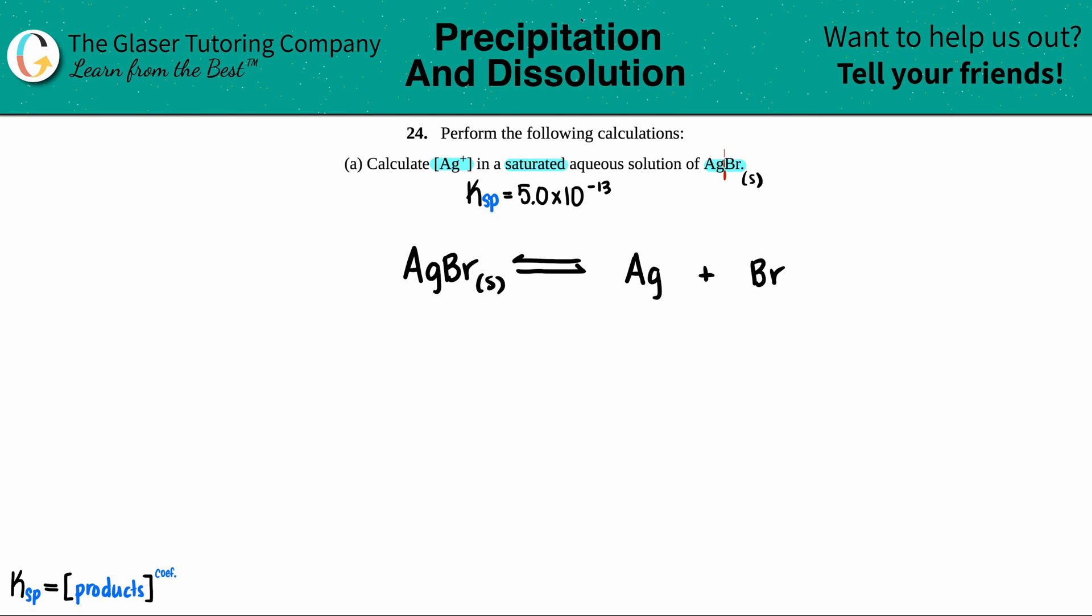Silver, which is Ag, is one of those transition metals that only has one oxidation state, which is a +1. And halides, such as bromine, if it's in an ionic equation, it's always going to be a -1. It's in group 7A. Since we have charges, these are aqueous. And I'm looking at the equation and it's already balanced for us. So we're good to go here.